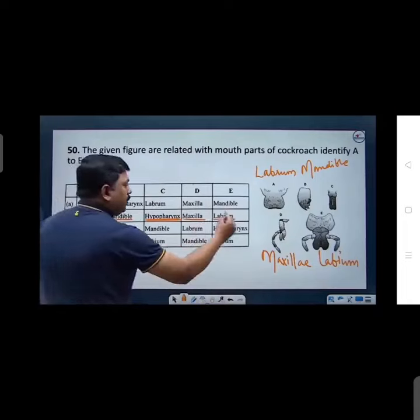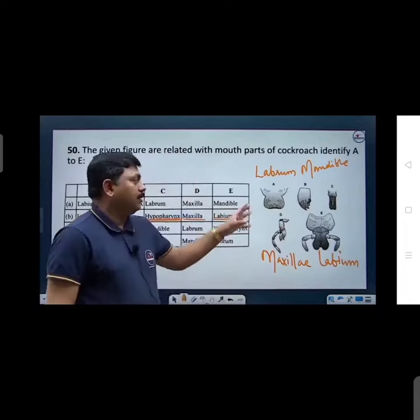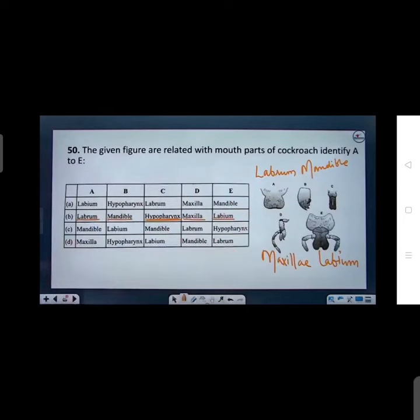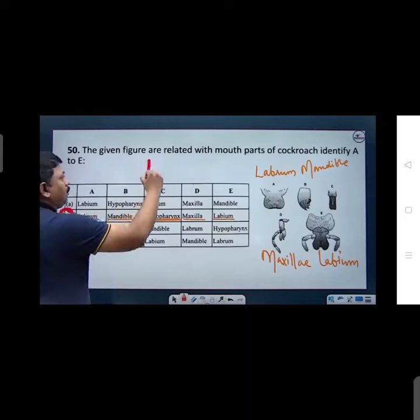Again, these respective A, B, C, D, E has been recognized with different mouth parts. Labrum, mandible, hypopharynx, maxillae, and labium. So, what is the option? Which option is the answer? Yes, commandos. Again, option B. Option B. Second is the answer.